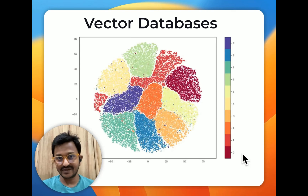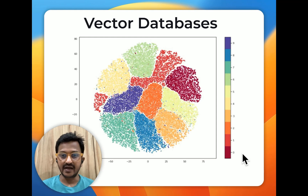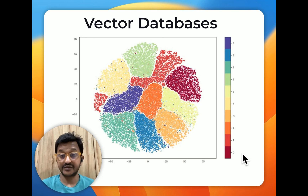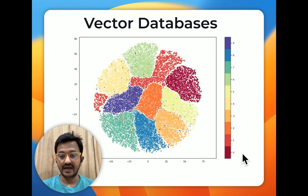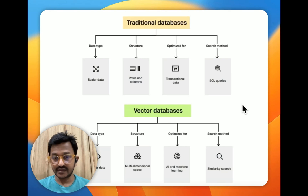We saw a simple scenario and understood the importance of databases in any application lifecycle. So that was a very simple scenario and simple data retrieval. What if the data is highly unstructured and high dimensional? That is where vector databases play an important role. You might ask: how are vector databases different from traditional databases?